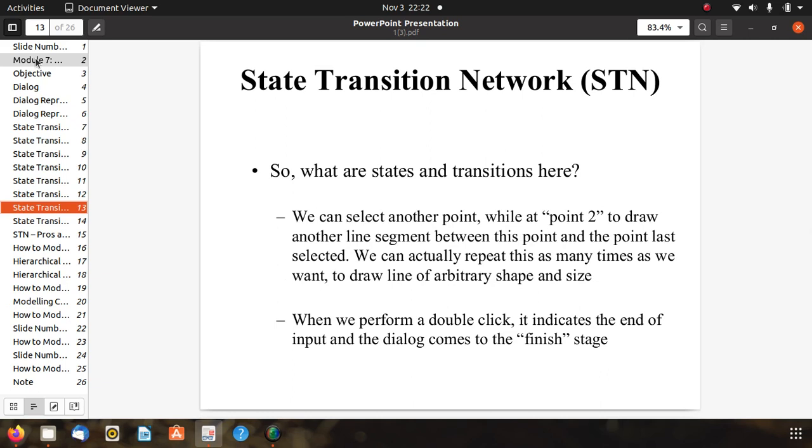It is a continuous process. We select another point while at point 2 to draw another line segment between this point and the point last selected. We can repeat this as many times as we want to draw a line of arbitrary shape and size. When we perform a double click it indicates the end of the input and the dialogue comes to the finish stage.